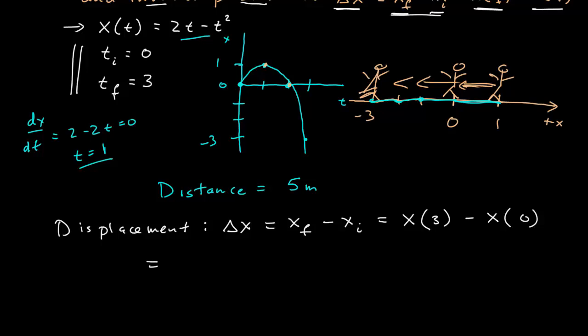And so at the final time, that's minus three meters, minus the position at t is equal to zero, which is zero. So the displacement is negative three meters.